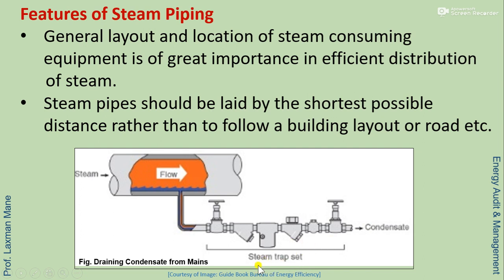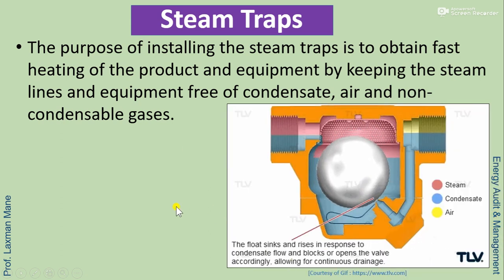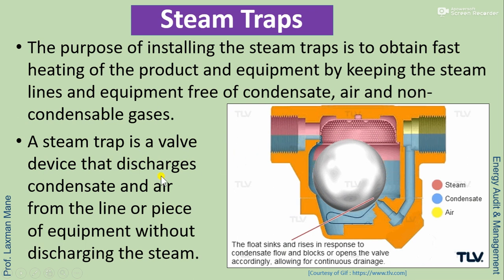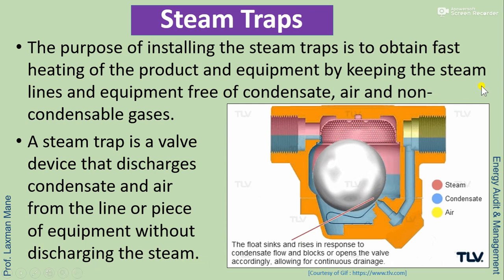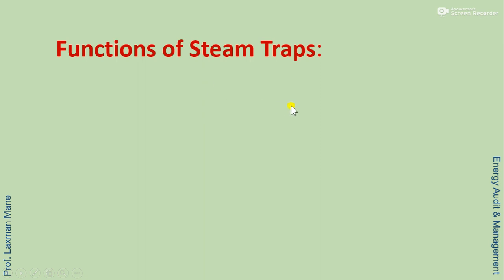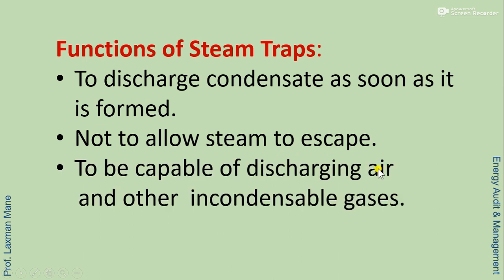A steam trap set is shown in this image. The purpose of installing steam traps is to obtain fast heating of the product and equipment by keeping the steam lines and equipment free of condensate, air, and non-condensable gases. A steam trap is a valve device that discharges or removes condensate and air from the line or piece of equipment without discharging the steam. The functions of steam traps are: to discharge condensate as soon as it is formed, not to allow steam to escape, and to be capable of discharging air and other non-condensable gases.